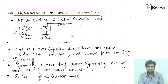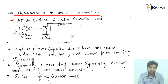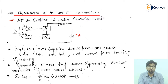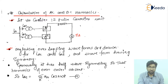Let us consider the 12-pulse converter unit. This is the basic 12-pulse converter unit having two 6-pulse thyristor units connected in series. The converter transformers supply current: Ia1 from one line and Ia2 from another, with the total current Ia = Ia1 + Ia2.